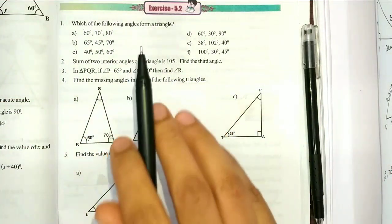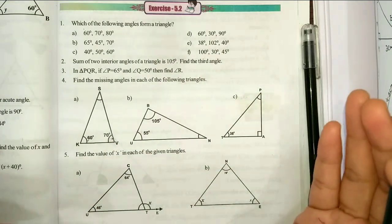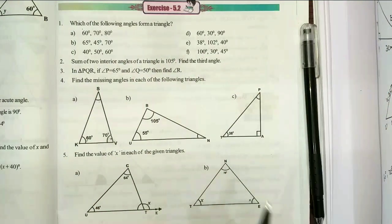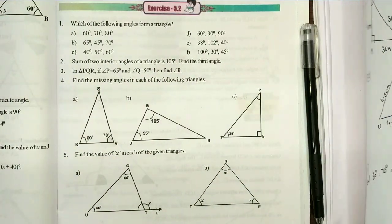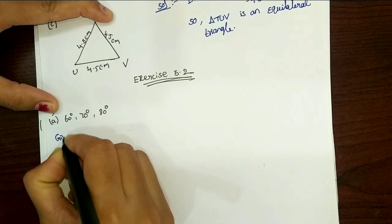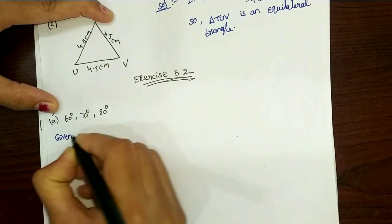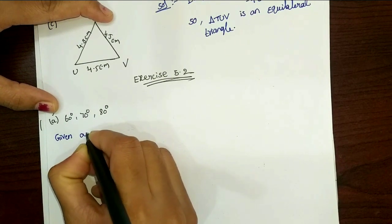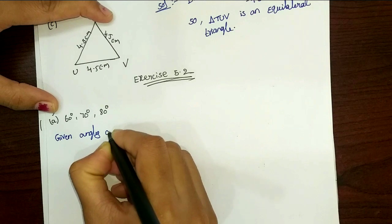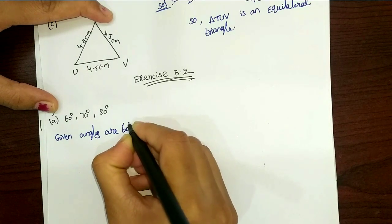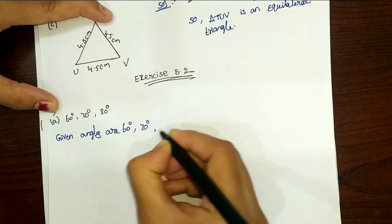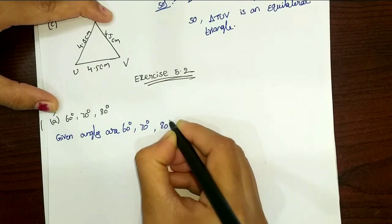If the triangle's angles sum to 180, the triangle will form. Solution: given angles are — first of all, what do we know? Given angles are 60 degrees, 70 degrees, 80 degrees.